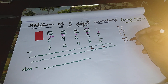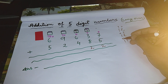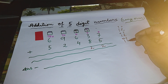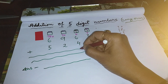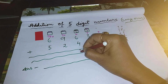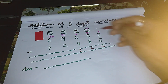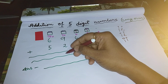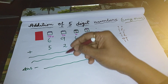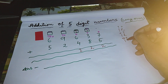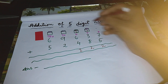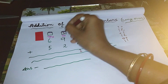So one belongs to hundred's place. One belongs to thousand's place. So one will sit in the hundred's column. We will make a separate room for this one — one will sit over here.